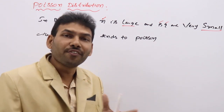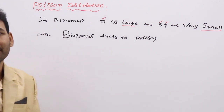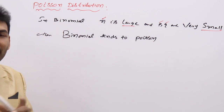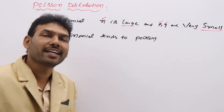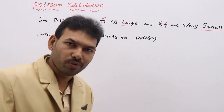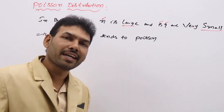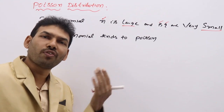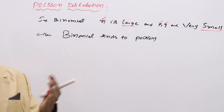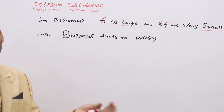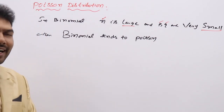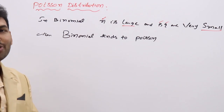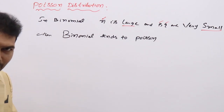When you feel n is large, use Poisson. When you feel n is finite — like n is 5, n is 10, up to n is 18 — we can go for binomial. When n crosses 20, you can prefer Poisson distribution to find probabilities.